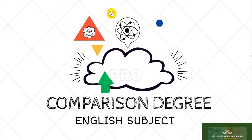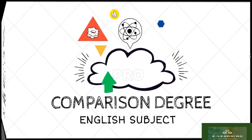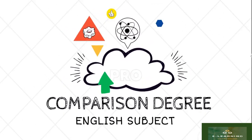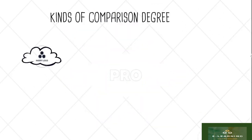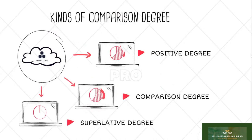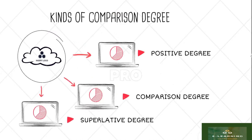Comparison degree is used when we compare one person or one thing with another. Comparison degree is divided into three types. The first is positive degree, the second is comparative degree, and the third is superlative degree. Please look at this chart showing the kinds of degree of comparison.